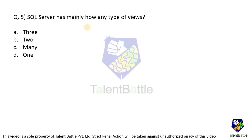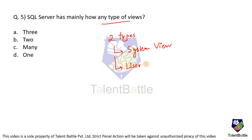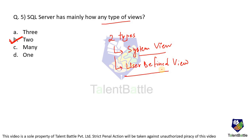SQL Server has how many types of views? There are two types of views in SQL Server. The first is a system-defined view (or system view), and the second is a user-defined view. Theoretical knowledge of SQL Server helps you solve this. The answer is two — system defined view and user defined view.